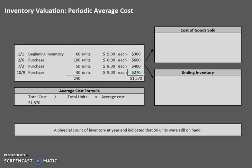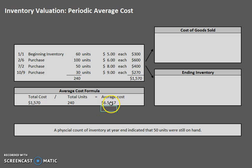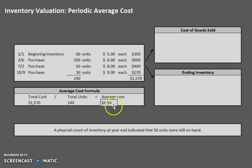Let's go ahead and plug in those 240 units. Total cost divided by total units gives us roughly $6.54. If you see these problems, typically your software or your instructor is going to want you to round this intermediate calculation to the nearest cent. So $6.54 per unit — that is the average cost. It actually finds that weighted average for us.